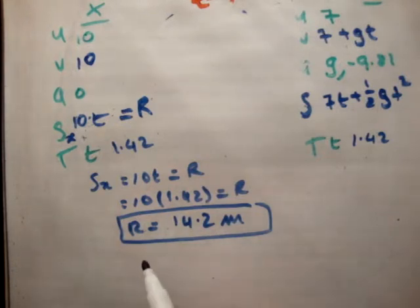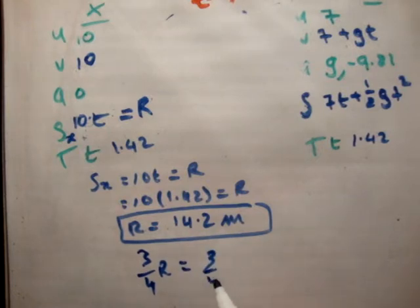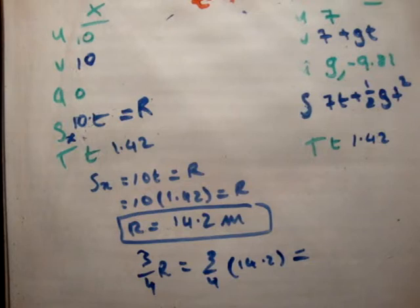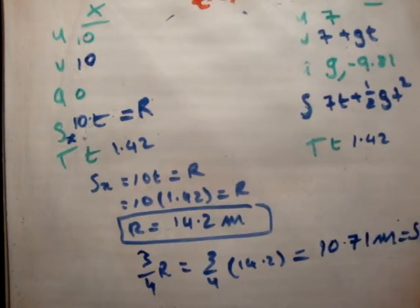So first of all, we need to find out what is 3 over 4 r. That's equal to 3 over 4 times 14.2. Let's find out what that is. 10.71 meters.